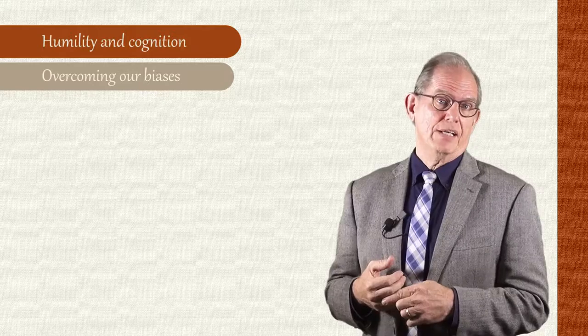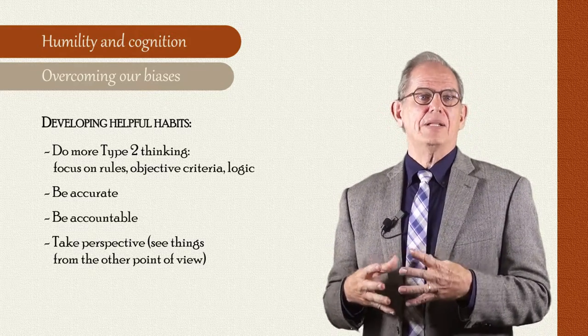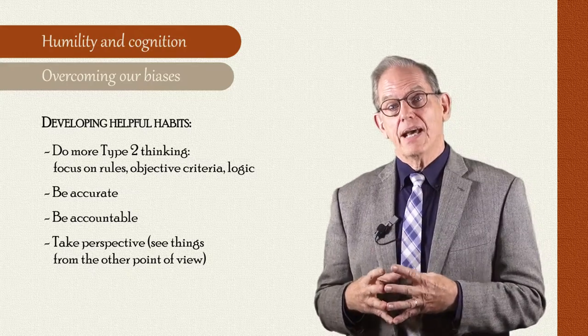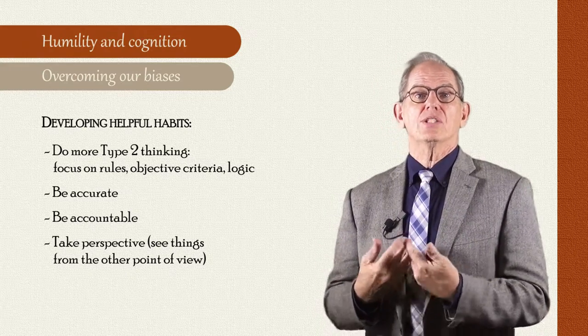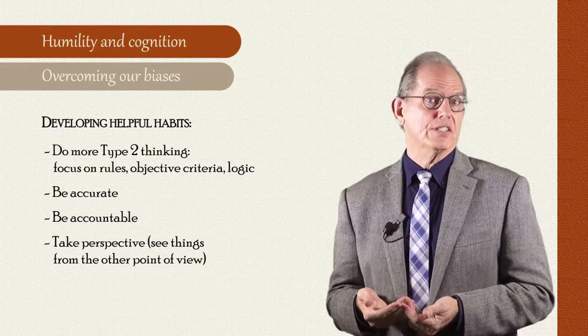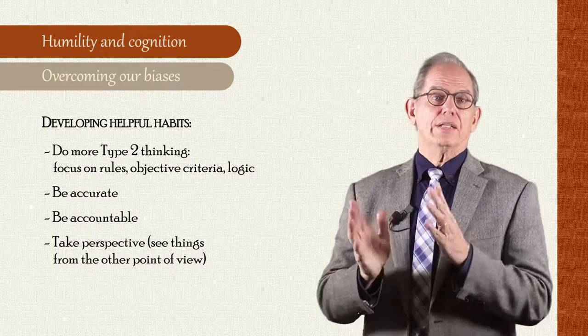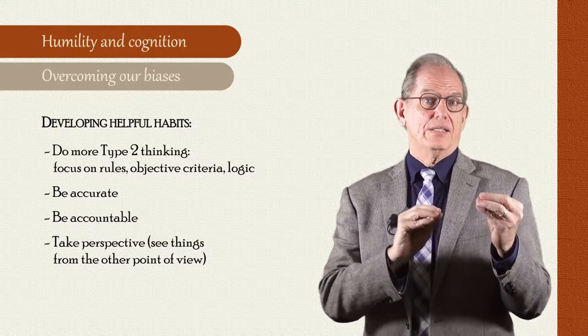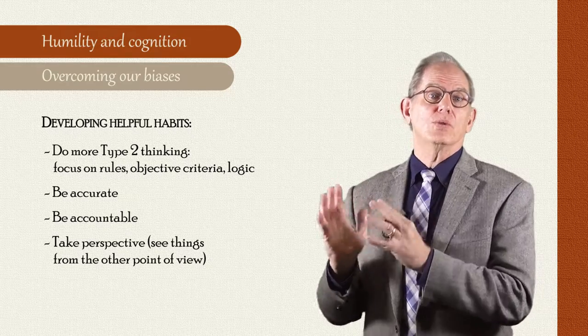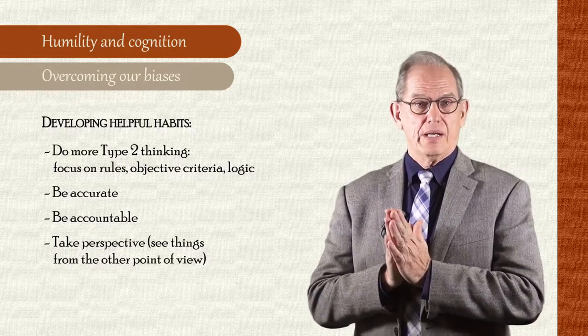It takes some intentional effort. Certain habits and attitudes can help mitigate the natural intellectual arrogance that can result from the cognitive shortcuts we take to make our thinking more efficient. A few of these habits are rule-based thinking—that is, directing one's attention to processes, objective criteria, and rules of analysis like logic that can aid in reducing systematic biases.